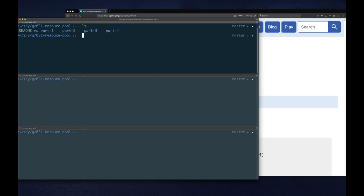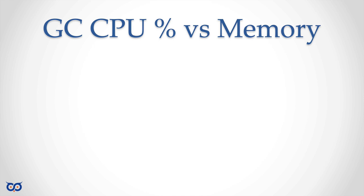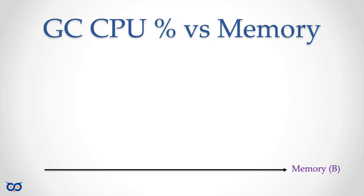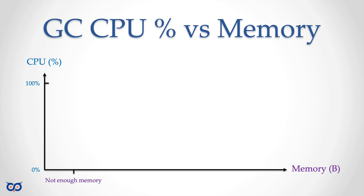To understand this, let me show you a graph — CPU percentage versus memory. The CPU percentage I'm talking about is the percentage dedicated to garbage collection. We can draw a line to represent the amount of memory we have, and on the y-axis we put the percentage of CPU used for GC — from zero, which is no CPU for GC, all the way to 100%. If an application requires a certain amount of memory and we don't have enough, we'll spend 100% of our CPU cycles trying to find or clean up memory.